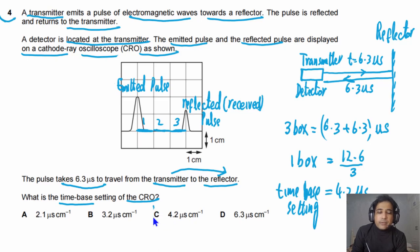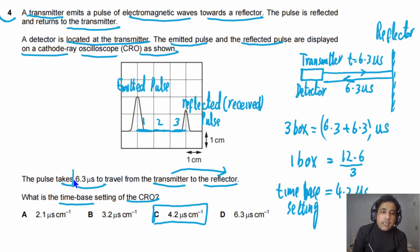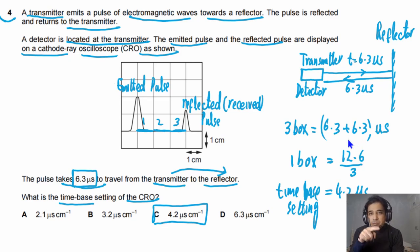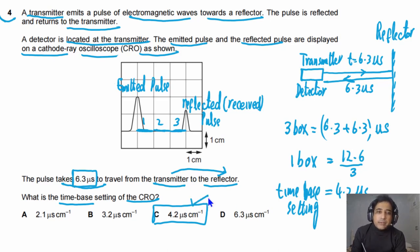So the answer for this question is C. The common mistake among students is that they use only the one-way travel time. But that is the time between transmitter and reflector only — you have to double that time and then divide by the number of boxes to find the final answer.